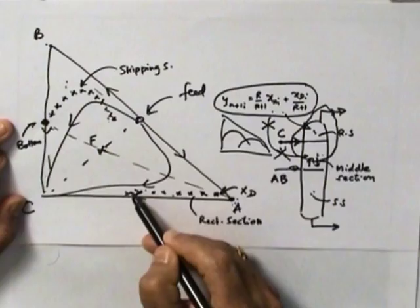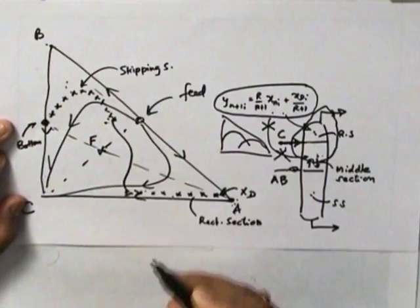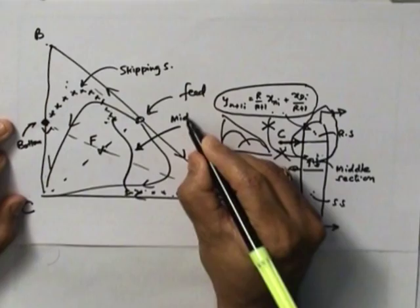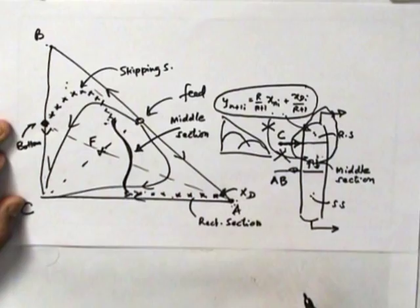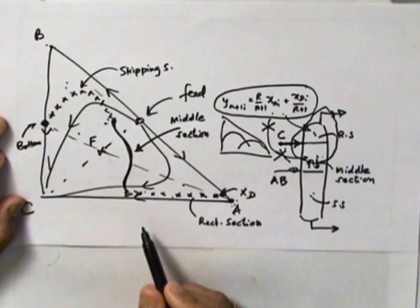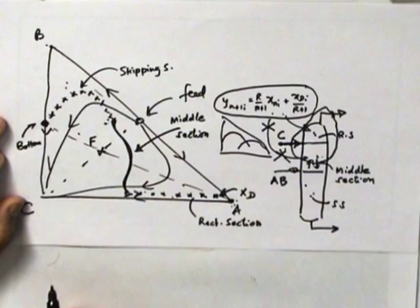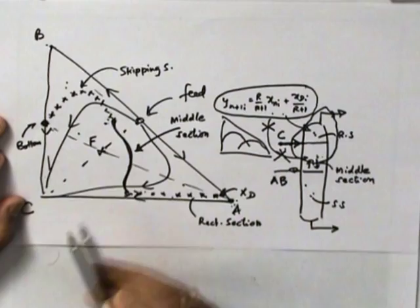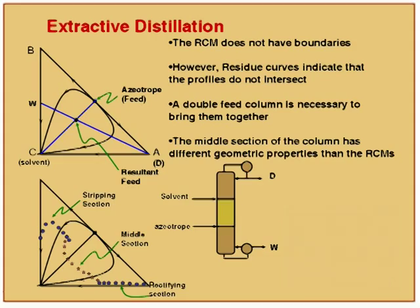And that middle section is responsible for joining these two profiles — making them intersect or bringing continuity. So if you start from x_D, you can go to x_B this way, and this particular part is nothing but your middle section. So, even if one residue curve does not go from this region to that region, I can introduce a middle section — I can have a double-feed column — and make these two profiles intersect, because the middle section has no relation with the residue curve.